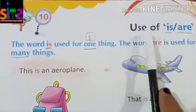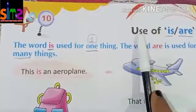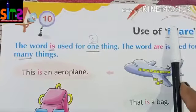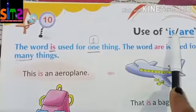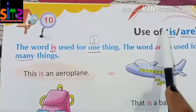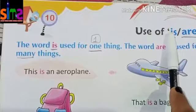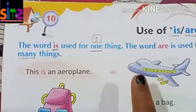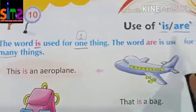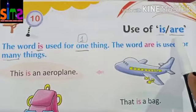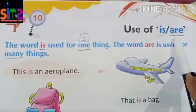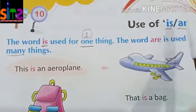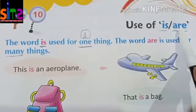So kids, what we are studying today is the use of 'is' or 'are'. We use 'is' for one thing, only one thing. And the word 'are' is used for many things.